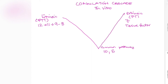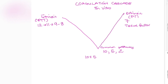In the common pathway we have factors 10, 5, and 2. Once the intrinsic and extrinsic pathways finish, they activate factor 10, which goes to 10a. Factor 10 also activates factor 5, which goes to 5a. Together, factors 10 and 5 activate factor 2, which is prothrombin, converting it to thrombin.